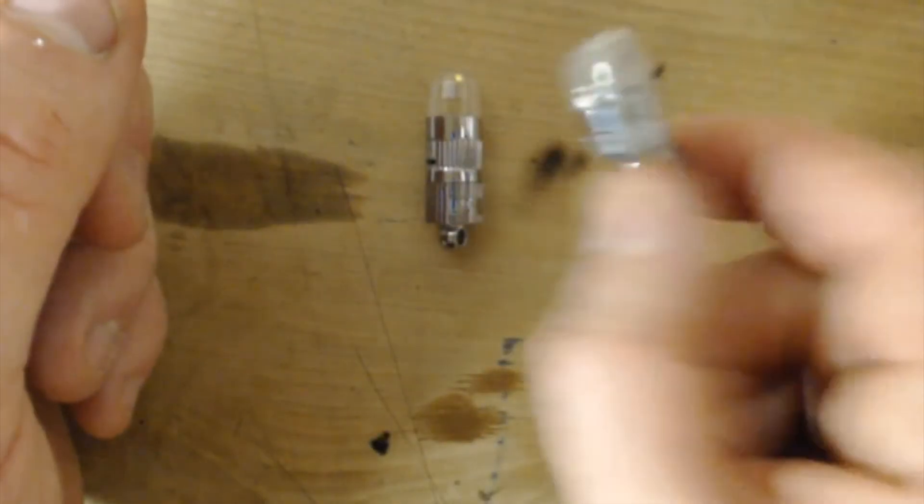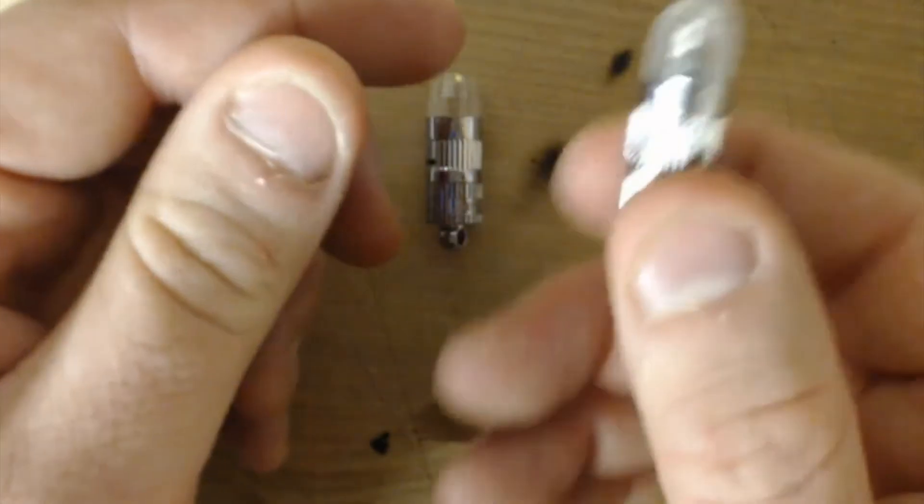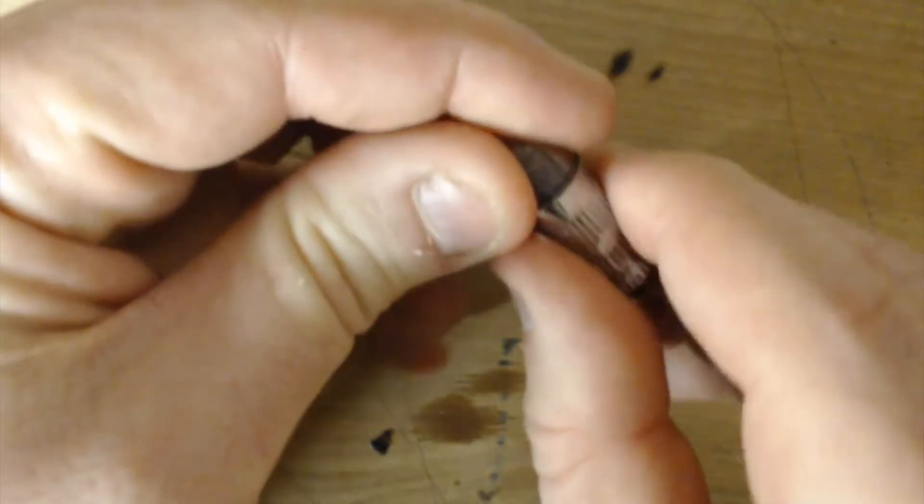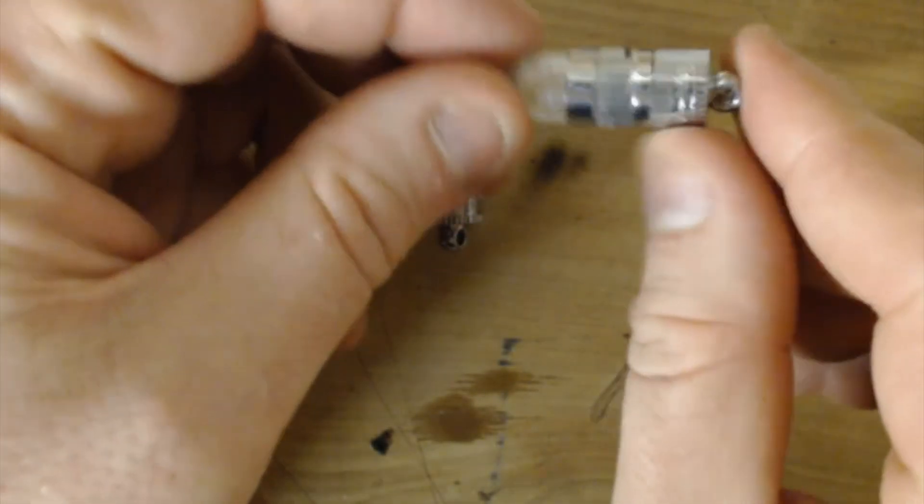These are balloon lights that you tie to balloons, you tie to the little ribbons on the bottom of the balloon, and you put it inside the balloon and it lights the balloon up. Or you can also put these in paper lanterns. There's a bunch of different craft uses for these things.